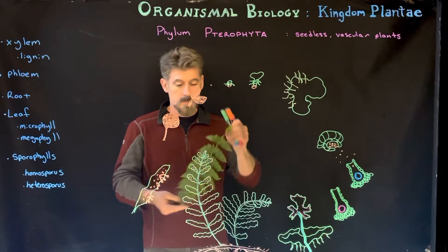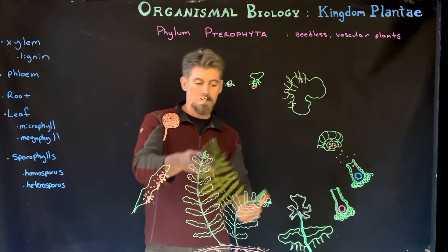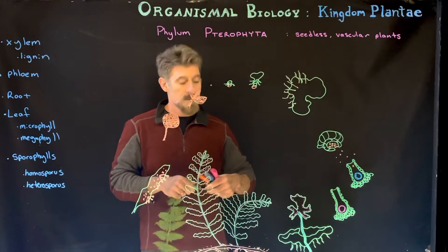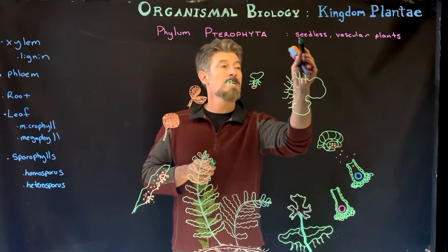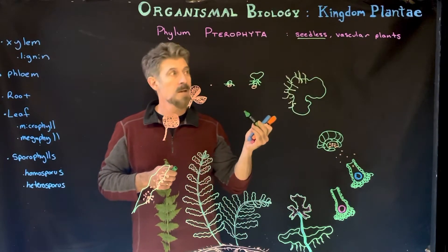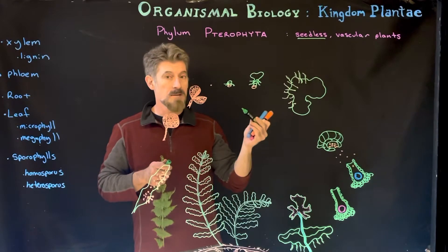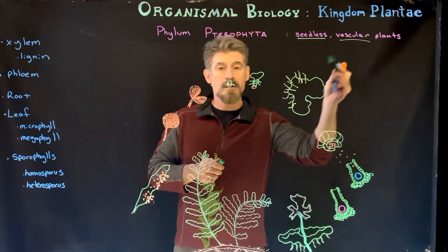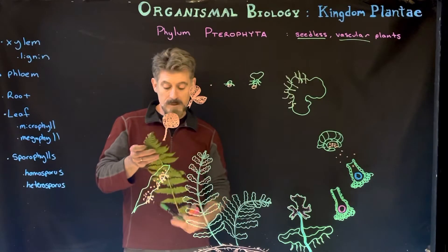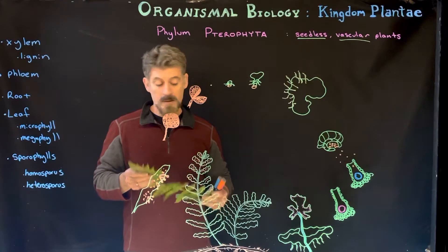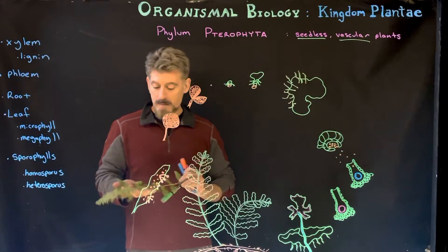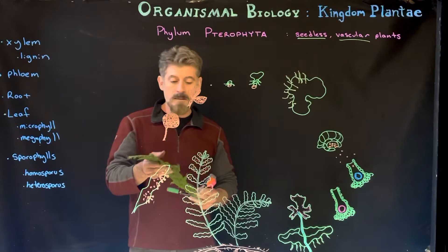Here we have an actual fern, and we're talking about the phylum Pterophyta. This is our new group of plants — also a group of seedless plants like Bryophyta. Bryophytes are seedless but non-vascular; they have no vascular tissue. This group is now vascular, so this is going to be the first group with vascular tissues to invade land and actually form ancient forests, with very large tree-like structures made up of pterophytes.